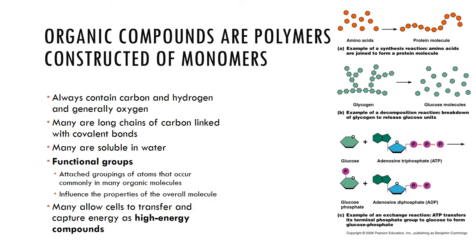Organic compounds contain carbon and are unique to living systems. Many are polymers — chains of similar units built from smaller building blocks called monomers. They can be synthesized by dehydration synthesis or broken down by hydrolysis. Many are soluble in water and have certain functional groups associated with them. There are four groups of organic compounds: carbohydrates, proteins, lipids, and nucleic acids.